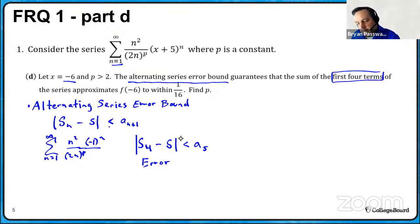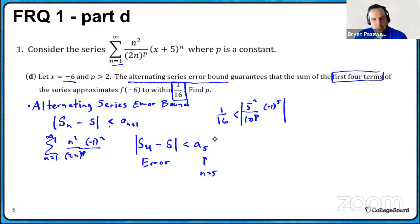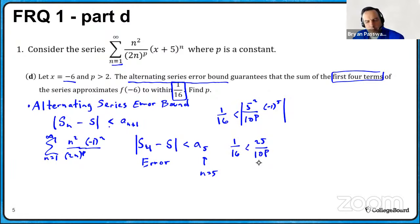They gave us the error bound: 1/16. So 1/16 is greater than |a₅|. The fifth term has n=5: a₅ = 5² / (2·5)^p · (-1)^5 = 25 / 10^p · (-1). Taking absolute values, the negative one disappears. So 1/16 < 25/10^p. Solving: cross multiply to get 10^p < 25 × 16 = 400.